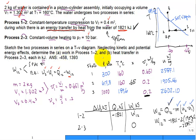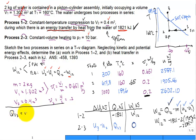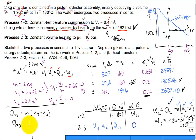For part B, the heat transfer Q 2-to-3: since the work 2-to-3 is zero (constant volume), the energy balance gives Q 2-to-3 equals mass times (u3 minus u2), which equals 2 times (2602.10 minus 1905.66), giving Q 2-to-3 equals positive 1393 kilojoules. This is positive, confirming it is heat addition into the system during this process.